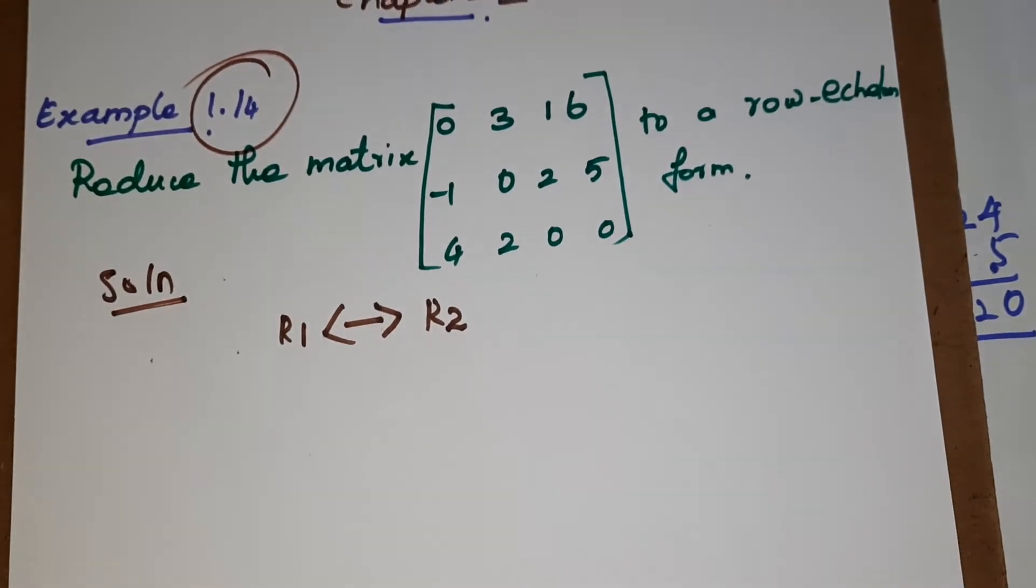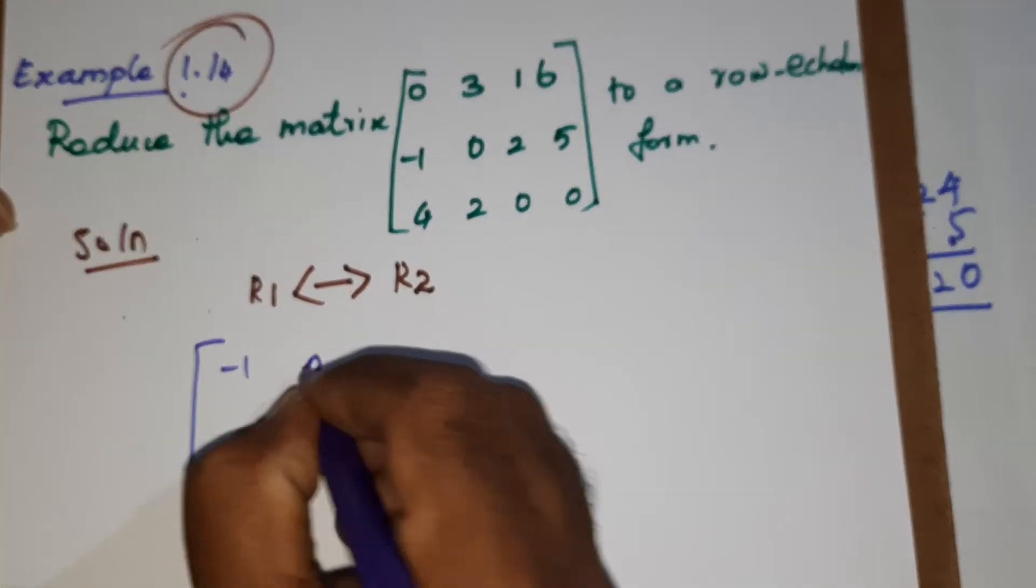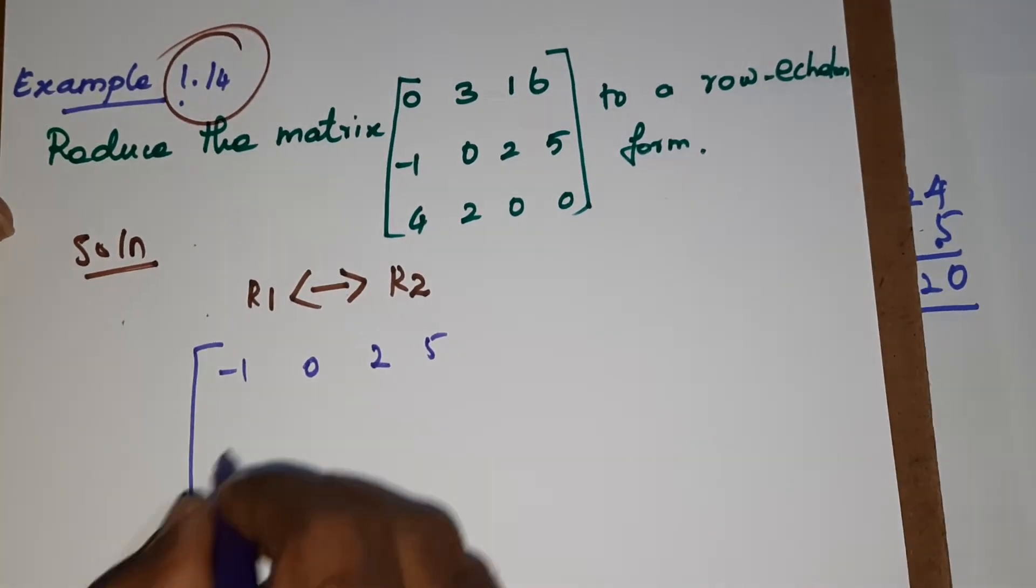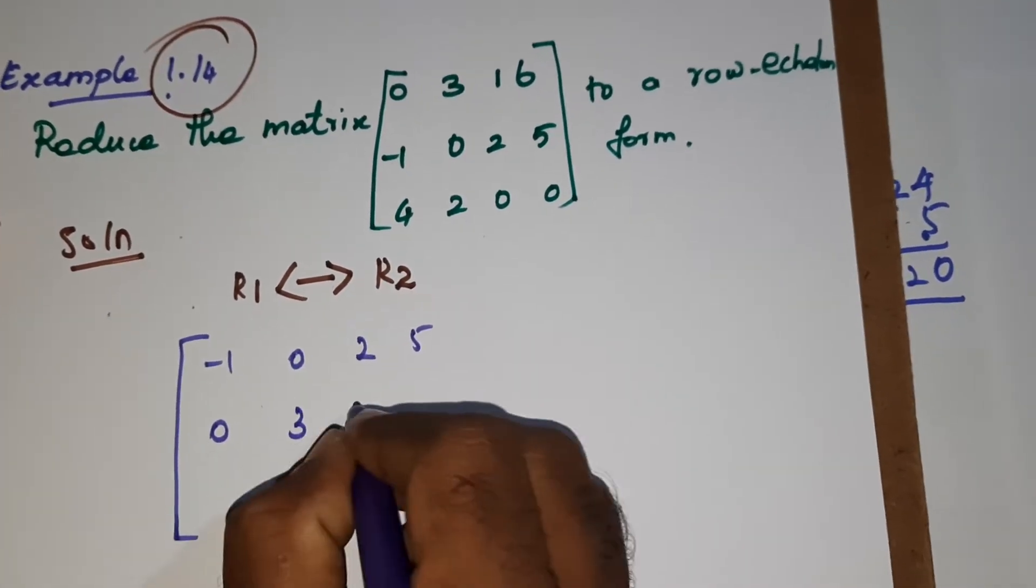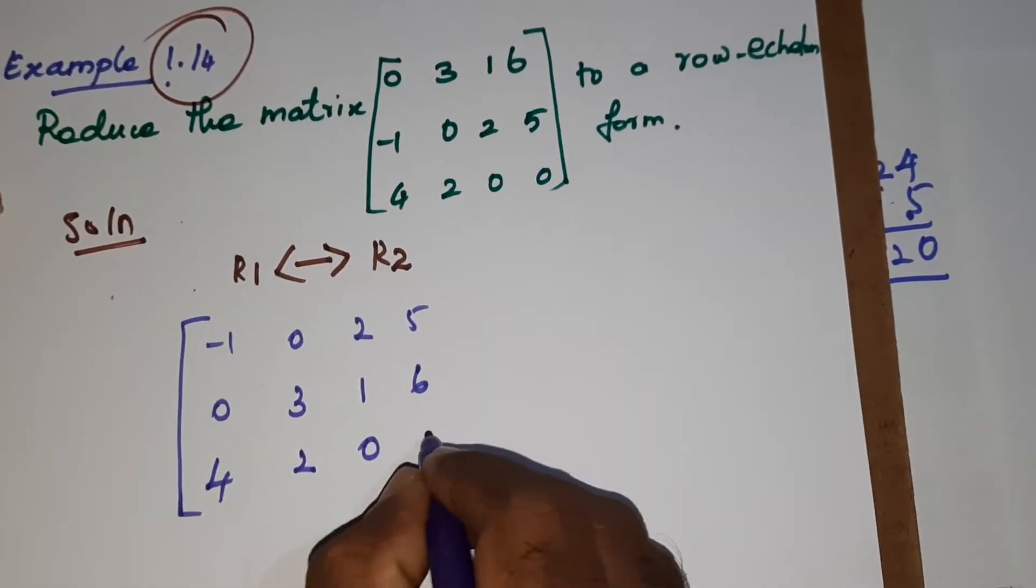So R1 interchange R2 means what will happen? Minus 1, 0, 2, 5. Next row, 0, 3, 1, 6. Third row as it is, what is the third row? 4, 2, 0, 0. This is our third row.